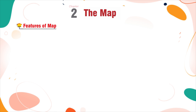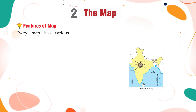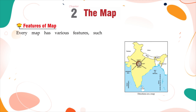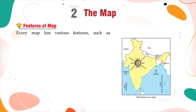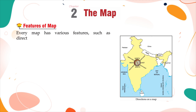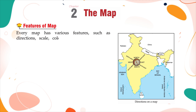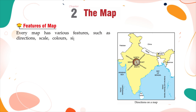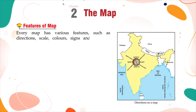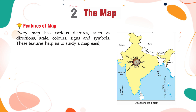Features of Map. Every map has various features such as directions, scale, colors, signs, and symbols. These features help us to study a map easily. Let us study them in detail.